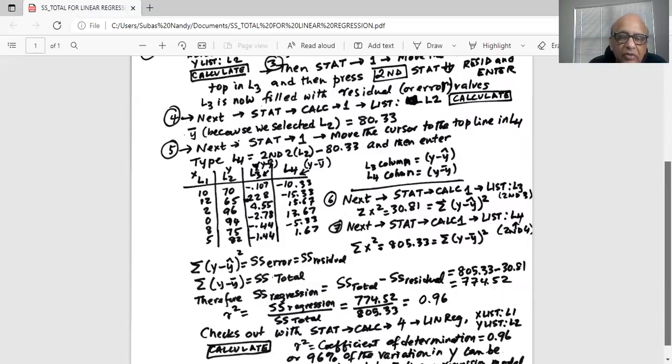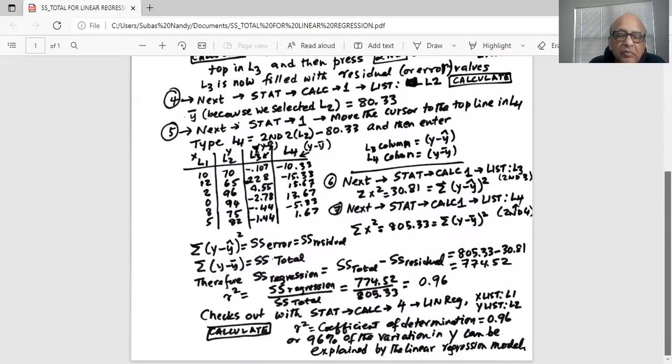So from 805.33, if I subtract 30.81, I get sum square regression as 774.52. And what is the definition of R squared? It is sum square regression divided by sum square total. That is 774.52 divided by 805.33, which is 0.96. We'll check that out.